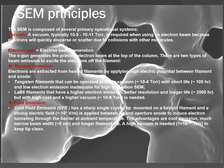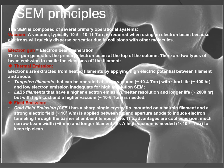With field emission, we have cold field emission: a sharp single-crystal tip mounted on a hairpin filament, with a strong electric field of 10⁷ V/m applied between the tip and aperture anode to induce electron tunneling through a barrier at ambient temperature. The advantages are cool emission, a much narrower beam width of approximately 5 nm, and longer filament lifetime. A high vacuum of up to 10⁻¹¹ torr is required to keep the tip clean.